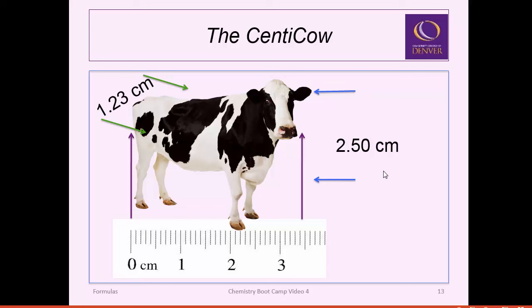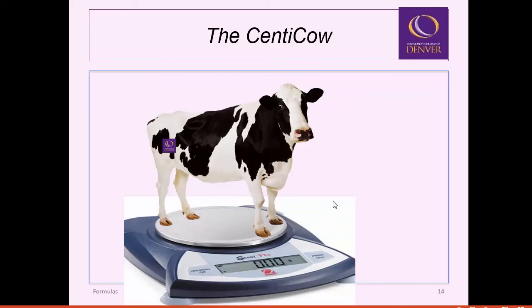Now we're going to do another density calculation with what I call the Senta Cow. This cow is about 3.4 centimeters long, 2.50 centimeters tall for the body, and 1.23 centimeters wide. We're going to work on the boxy part and figure out its density to determine whether this miniature cow will float or sink. We throw it on the scale and it's 2.45 grams.